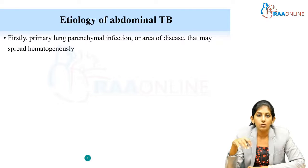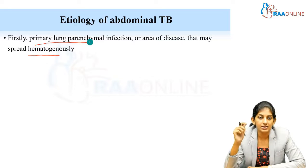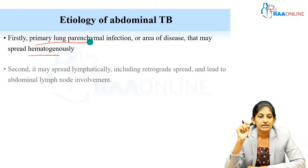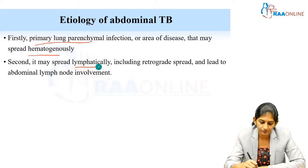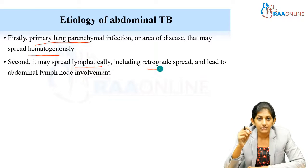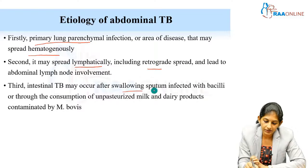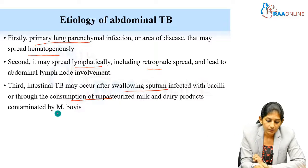How does abdominal tuberculosis occur? There are around five common modes. First is hematogenous spread — from a lung primary with parenchymal involvement that spreads hematogenously to the abdomen; this is the most common mode. Second is lymphatic spread, mostly retrograde, which leads to abdominal lymphadenopathy. Third is either swallowing of infected sputum containing AFB, or ingestion of unpasteurized milk infected with Mycobacterium bovis.